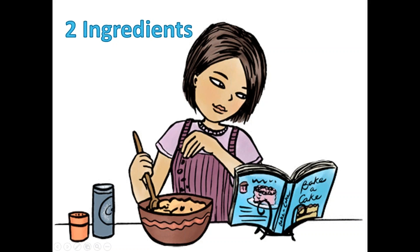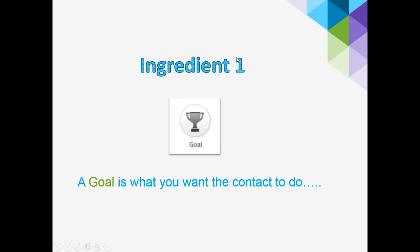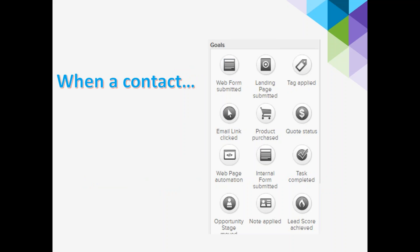With the Infusionsoft campaign builder, there are just two ingredients to build a simple campaign — even a complex one. The first ingredient is a goal. Campaigns begin with a goal, represented by a circle. A goal is what you want the contact to do: fill out a web form, submit a landing page, click on a link, register for an event. Today we're going to focus on the web form submitted goal. You can go to the help center and type in 'campaign goals' to learn about every goal.